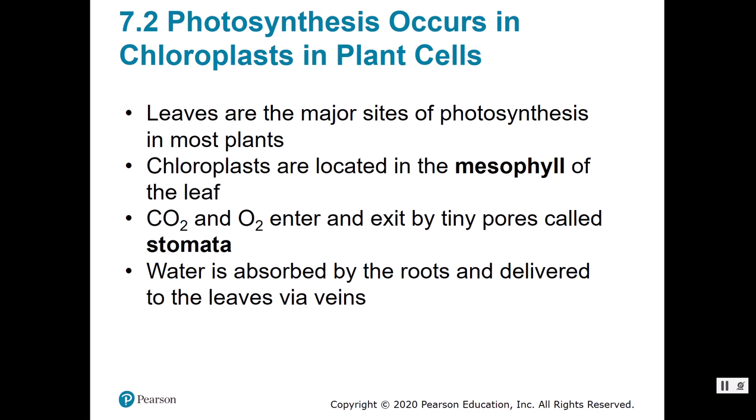Objective two says describe the structure of a leaf and a chloroplast. Photosynthesis takes place in chloroplasts in the plant cells, and leaves are actually the major sites of photosynthesis in most plants. Chloroplasts, on page 137, are located in the mesophyll of a leaf. The mesophyll is the center tissue of the leaf where all the cells are, and that is where you find all the chloroplasts, which is where photosynthesis is going to happen.